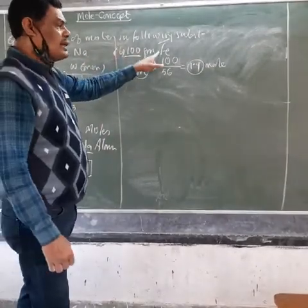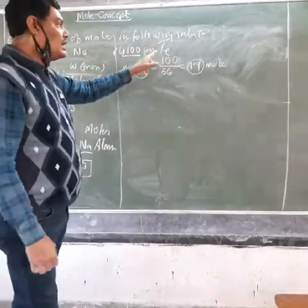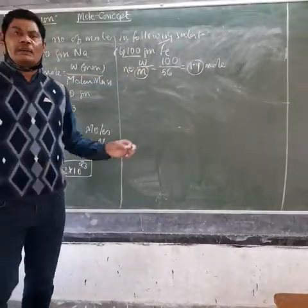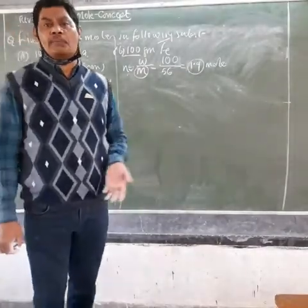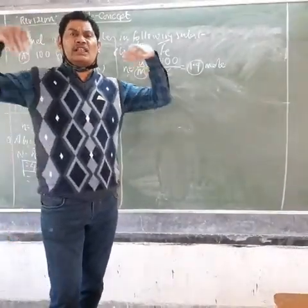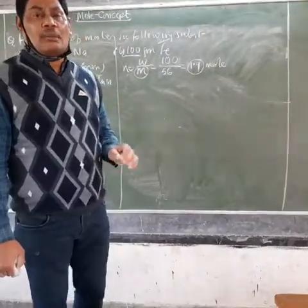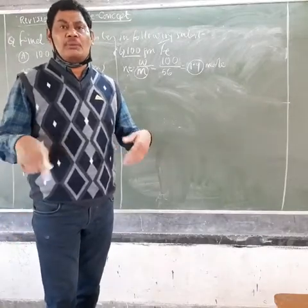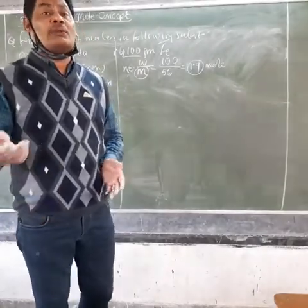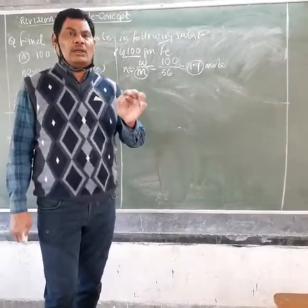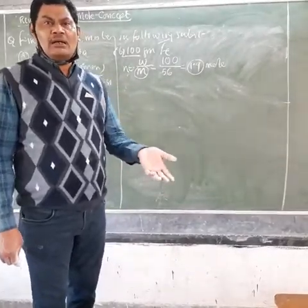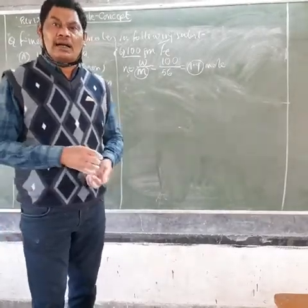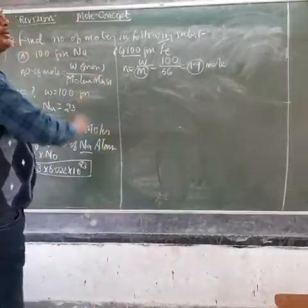This means that as the molar mass of a metal increases, for a given weight, the number of moles will be lesser. For example, 1 mole of grain and 1 mole of apples both contain 6.022 × 10²³ particles, but 1 apple is bigger and heavier than a grain, so its weight will be higher. The same formula applies here.